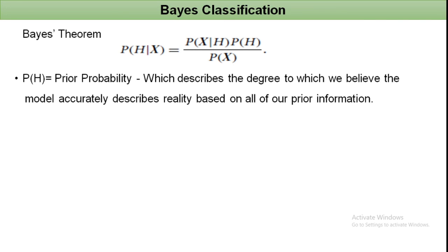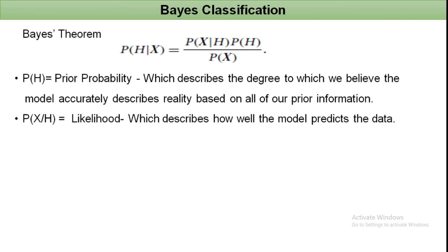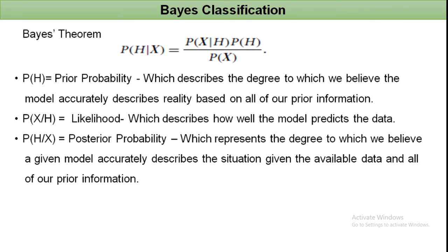P(H) is the prior probability, which describes the degree to which we believe the model accurately describes reality based on all prior information. P(H | X) is the posterior probability, which represents the degree to which we believe a given model accurately describes the situation given the available data and all prior information.